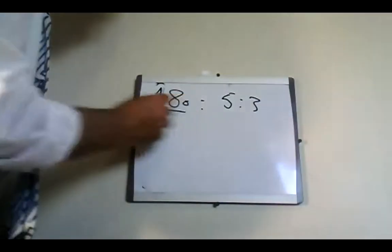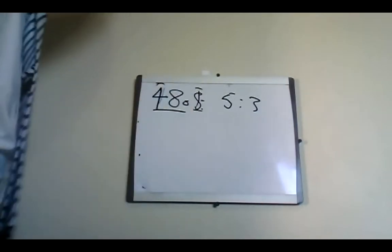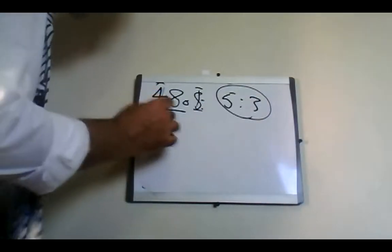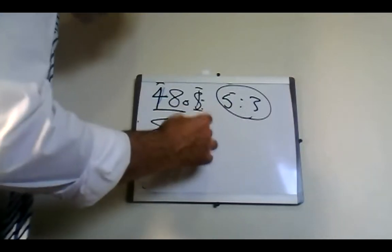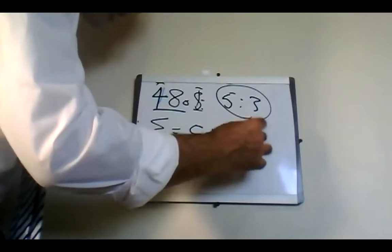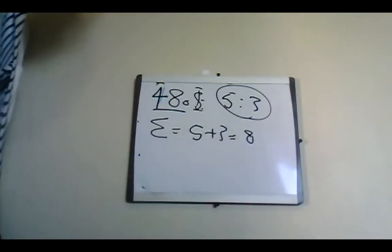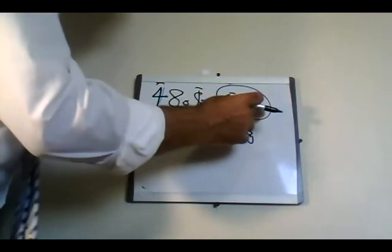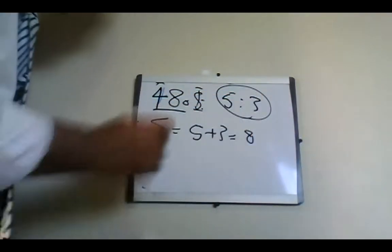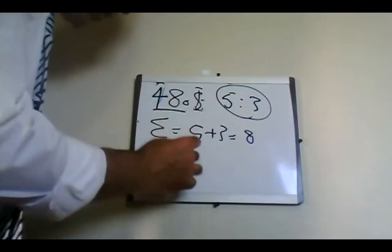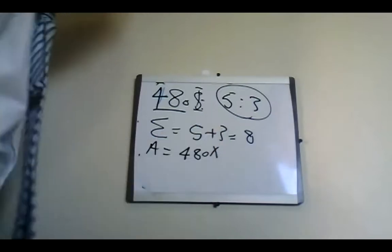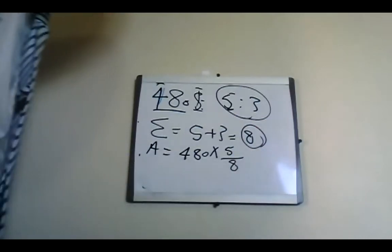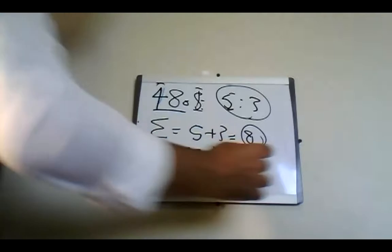We want to allocate 480 dollars by the proportion 5 to 3. The sum of the parts will be 5 plus 3, which equals 8. So 480 dollars will be divided — someone will take five parts and the other will take three parts. Person A's share will be 480 multiplied by 5 over 8, which equals 300 dollars.